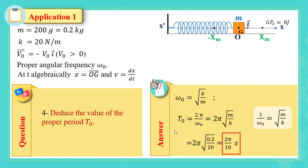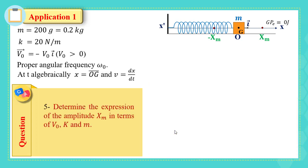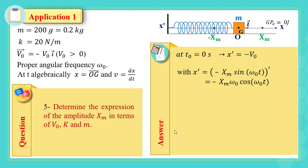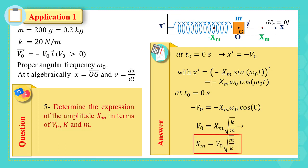The last part: determine the expression of the amplitude x_m in terms of v₀, k, and m. At t₀ = 0, x' equals −v₀. Writing the expression for x' = −x_m·ω₀·cos(ω₀t) and substituting t = 0: −v₀ = −x_m·ω₀·cos(0). Since cos(0) = 1, we get v₀ = x_m·√(k/m), therefore x_m = v₀·√(m/k). This is the end of the application for part three.